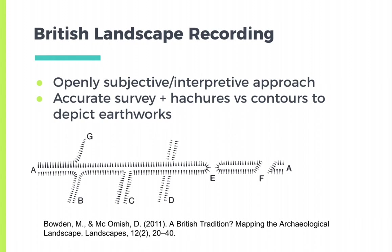A is overlaid by, and therefore earlier than C; overlies, and is therefore later than D; has been cut by a later breach at F; and the scarp at G fades into the natural topography. In theory, you should be able to read all of these things just by examining the hashers and the relationships between the hashers on this plan.